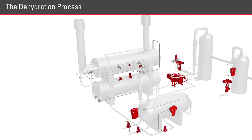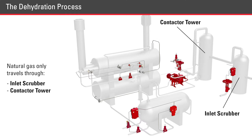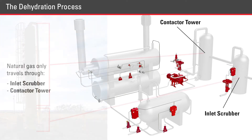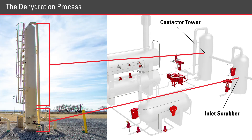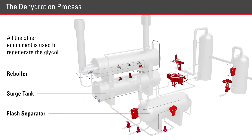There is a lot of equipment needed for the dehydration process. Natural gas only travels through the inlet scrubber and the contactor tower. On some sites, these two vessels are combined into one unit. All the other equipment is used to regenerate the glycol.